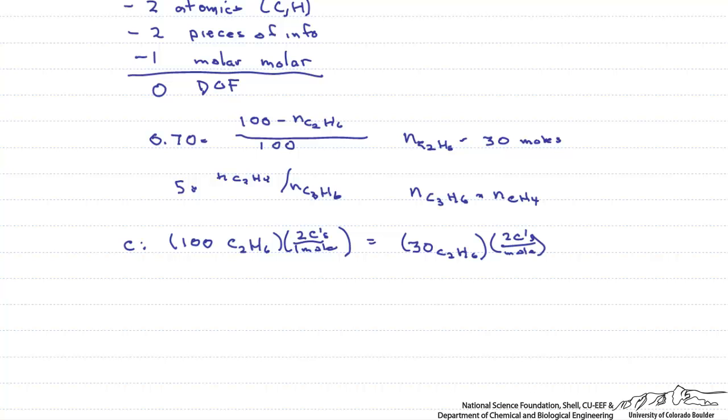And then we add to that the number of moles of our ethylene. And we see again, two carbons for every mole of ethylene.